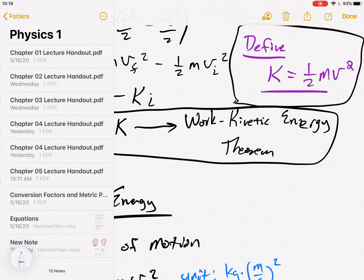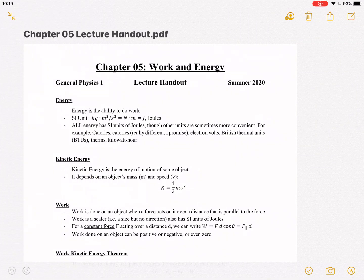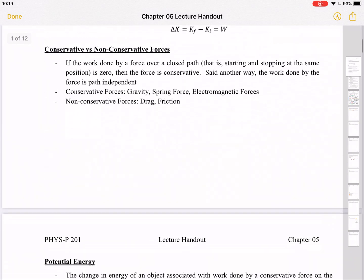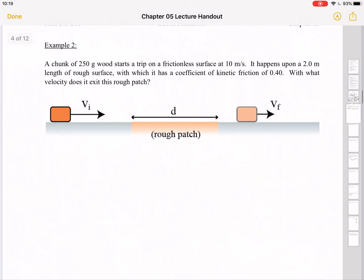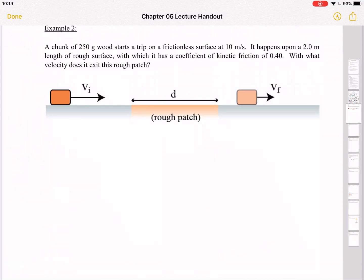This is example number two. A chunk of 250 gram wood starts a trip on a frictionless surface at 10 meters per second. It happens upon a two meter length of rough surface, which has a coefficient of kinetic friction of 0.4. With what velocity does it exit this rough patch?